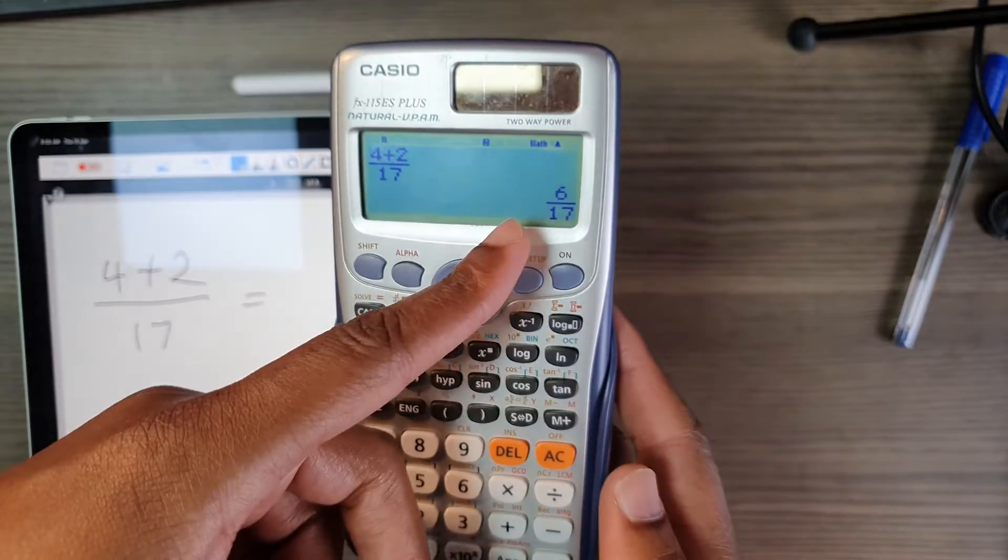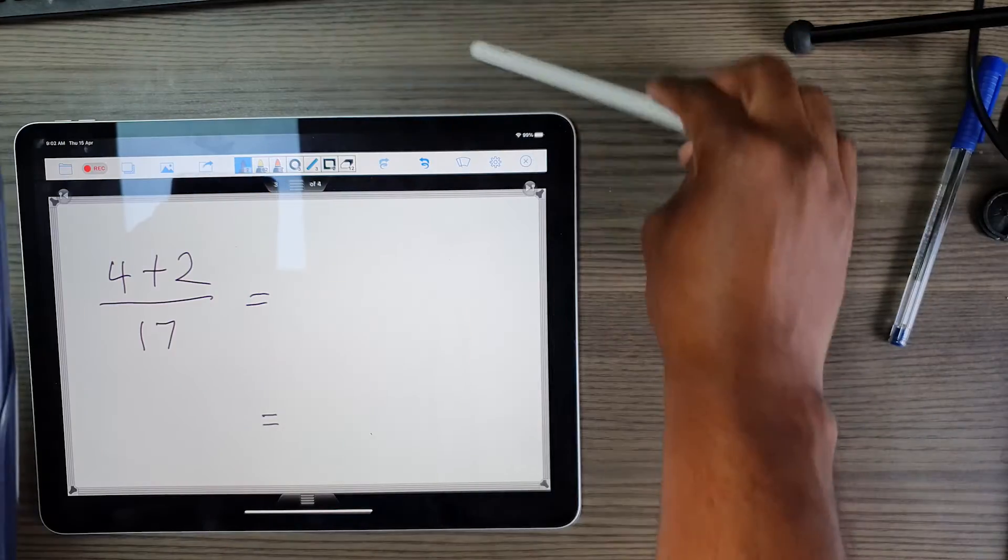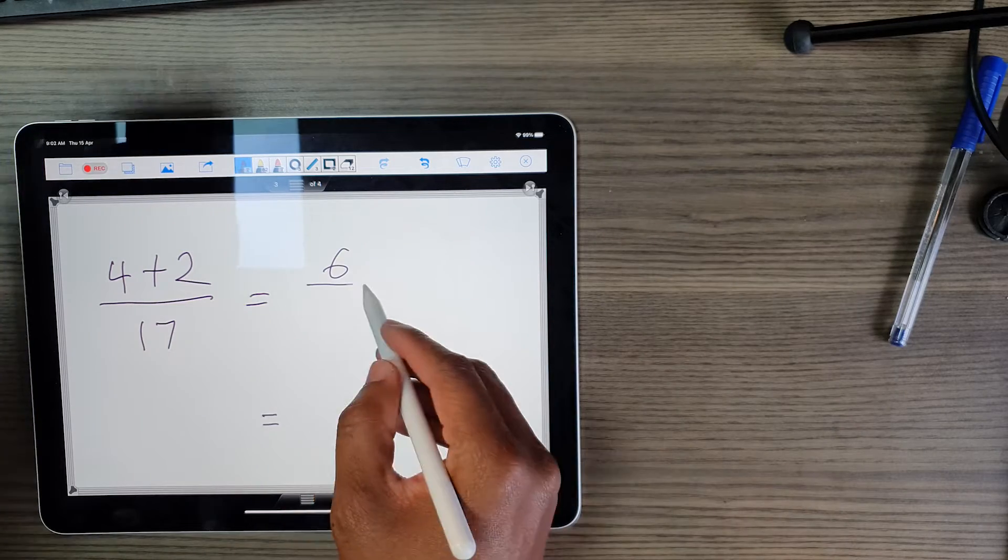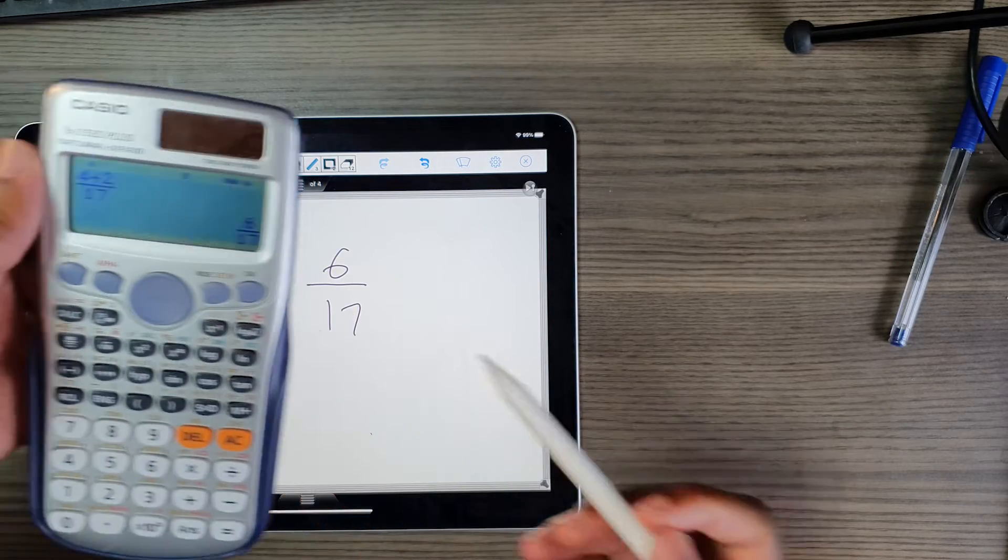6 seventeenths, so I can write 6 seventeenths here, which is obvious right—4 plus 2 is 6.